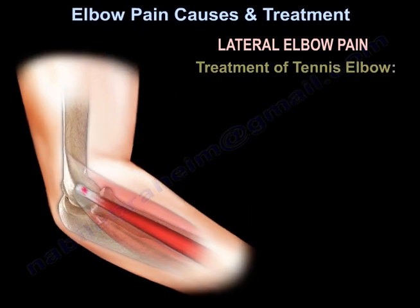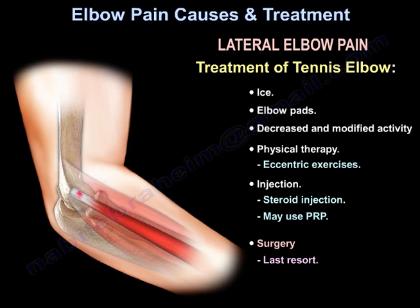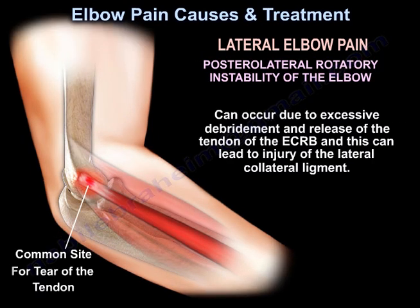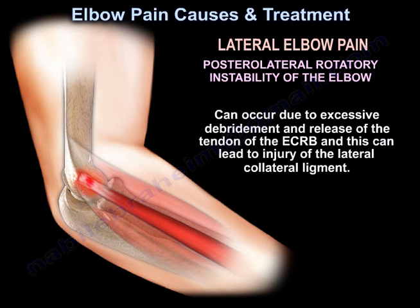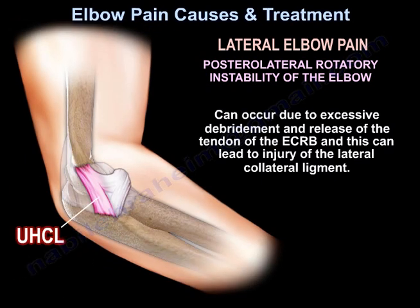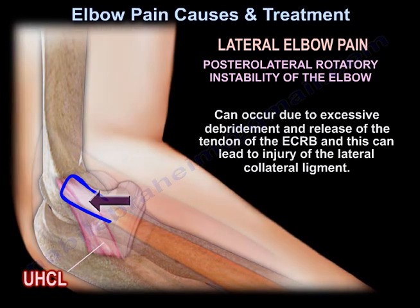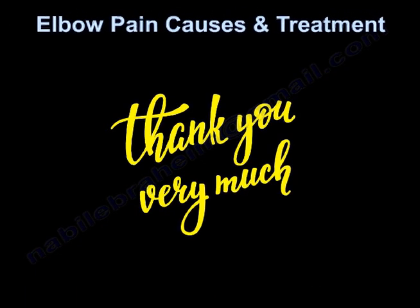Treatment of tennis elbow includes ice, elbow pads, decreased and modified activity, physiotherapy with eccentric exercises, injections — which can be steroids or PRP — and surgery as a last resort. Posterolateral rotatory instability of the elbow can occur due to excessive debridement and release of the tendon of the extensor carpi radialis brevis, which can lead to injury of the lateral collateral ligament. Thank you very much, I hope that was helpful.